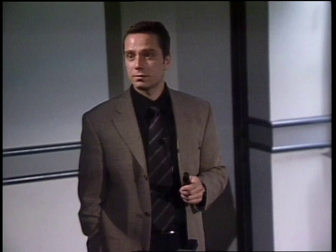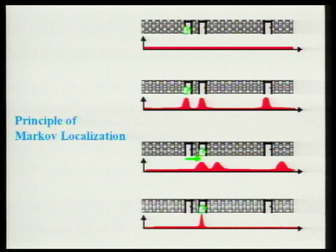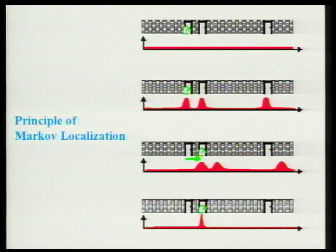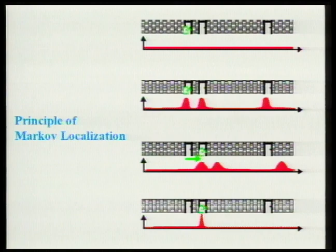The robot then moves one or two meters ahead. This distribution is first shifted according to the measured motion, and because motion information is uncertain, it is convolved — the robot becomes more uncertain about its position when it moves. Finally, imagine the robot again detects a door to its left. Integrating this information into the belief state, the robot can uniquely determine where it is. But the probability of being anywhere else is non-zero, because the sensor information might be wrong.